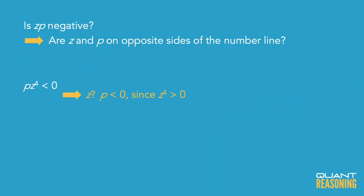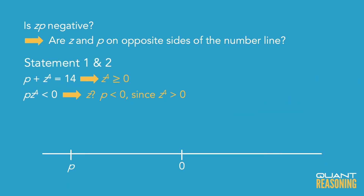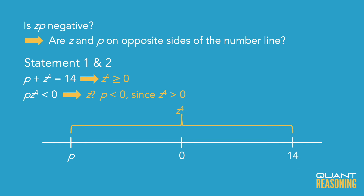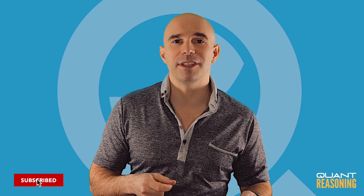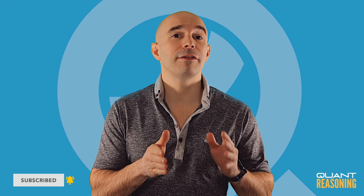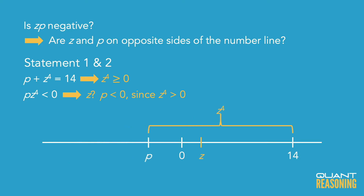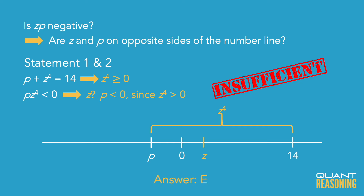Now combining both statements: we know P is definitely negative, and we know Z to the fourth is not negative. This negative value of P, once you add Z to the fourth to it, gives you 14. That tells us Z to the fourth is 14 units farther to the right of zero than P is to the left of zero — Z to the fourth has to be even farther from zero than P, but on the right-hand side. But where is Z? Still no idea. So are P and Z on opposite sides of zero? We have no idea. The correct answer is E.